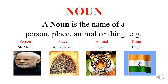What is a noun? A noun is the name of a person, place, animal or thing. For example, person: Mr. Modi our Prime Minister, Mr. Sharma, Mr. Raina, Mr. Patel, Mr. Shah, Rahul, Dina — all other names of the persons.